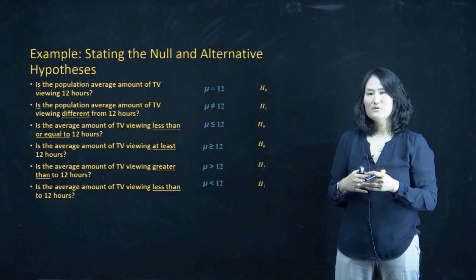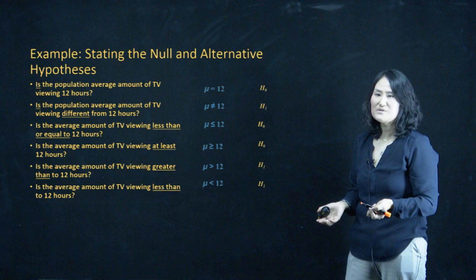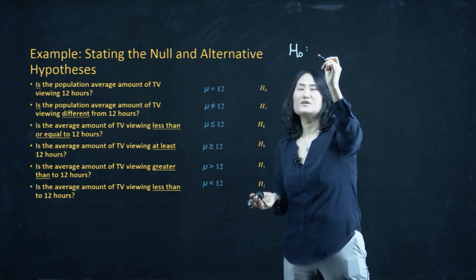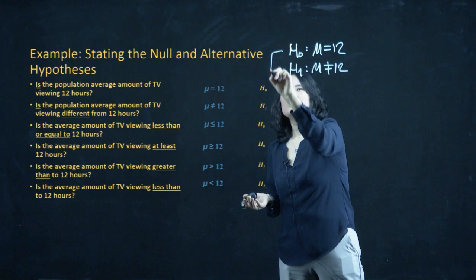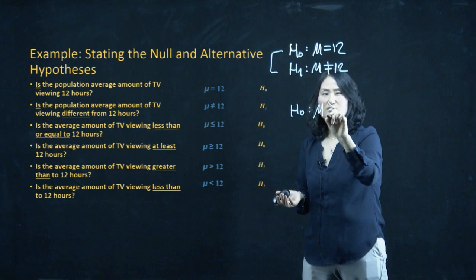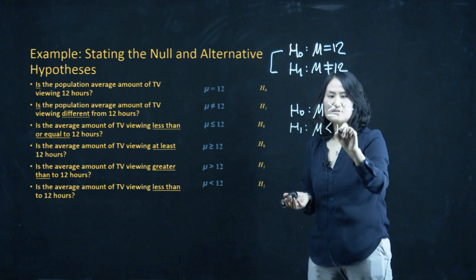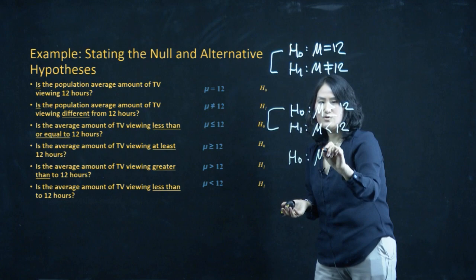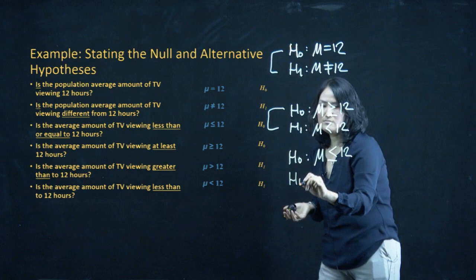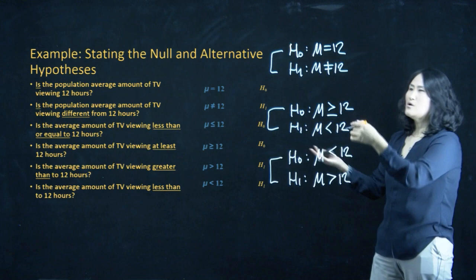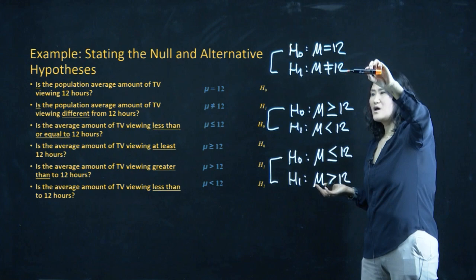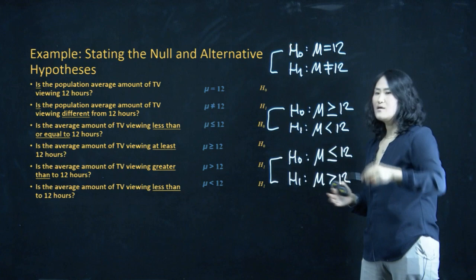In the end, we will have three different types of complementary pairs for hypothesis testing. We always write H0 first. The first pair: H0 mu equals 12, H1 mu does not equal 12. The second pair: H0 mu is greater than or equals to 12. The third pair: H0 mu is less than or equals to 12, H1 mu is greater than 12. No matter what you do, your claim will be one of these six. Once you figure out your claim, you always write the complementary form.